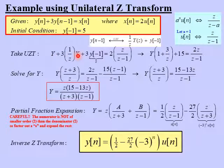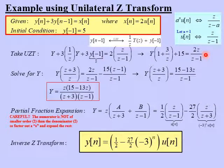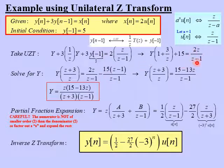Notice that the first two terms both contain Y. Factoring out Y leaves us with 1 plus 3 over Z. We have 3 times the initial condition 5, which is 15, and 2Z over Z minus 1 on the right. The next step is to move the 15 to the right side. Since we need to add it to the fraction, the least common denominator is Z minus 1, so we move 15 times Z minus 1 over Z minus 1, with a minus sign.